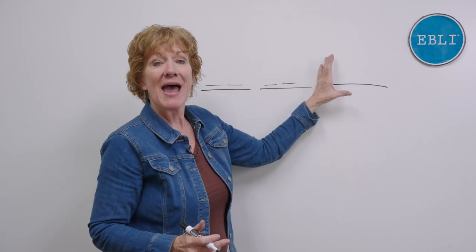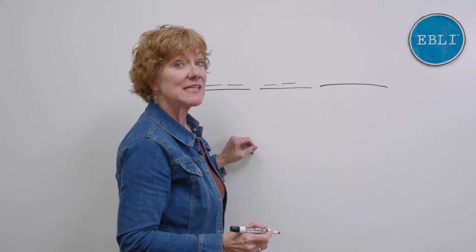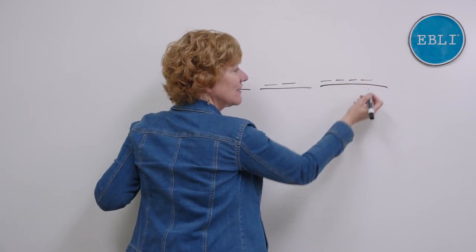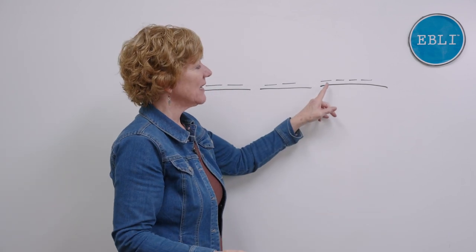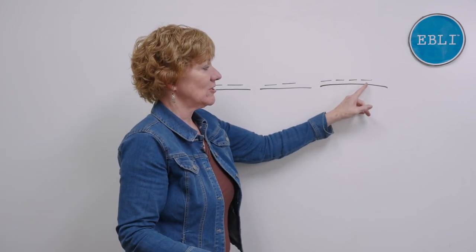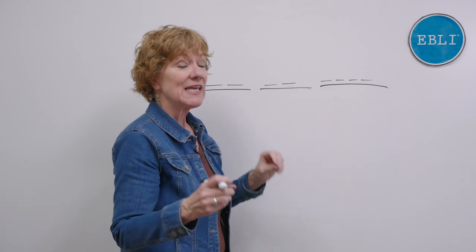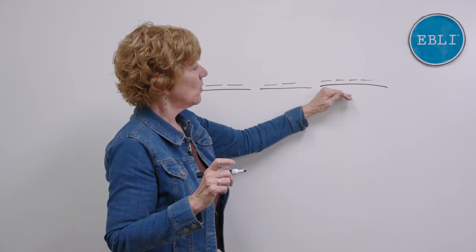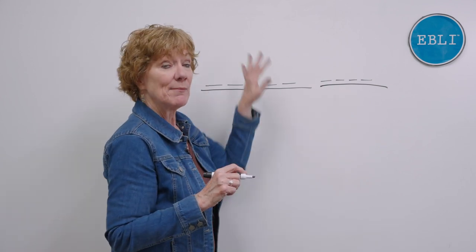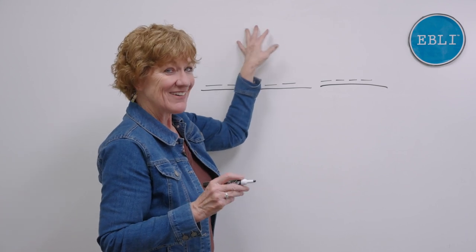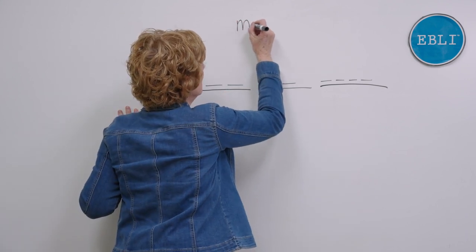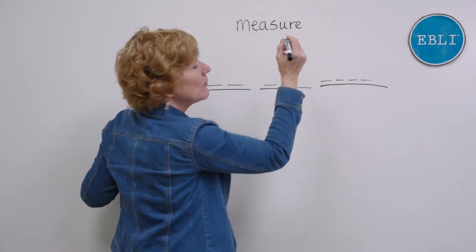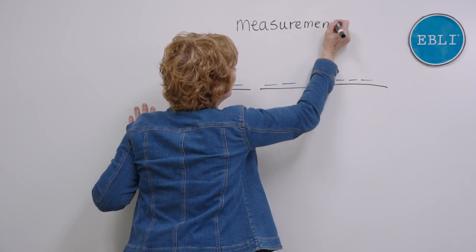So meh, jur. Then we have ment. Say our sounds as we put our lines down for ment. M, eh, n, t. Did you say all of those? If not, go back and say those. The key is having it come out of your mouth, going into your brain. So now we have our placeholders for our syllables and sounds for measurement. I'm going to write the word up here and then we're going to match our spellings. I'm saying my sounds in my head, by the way, but not out loud because I don't want you to hear me just yet.